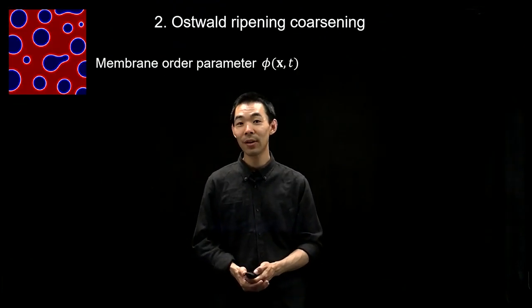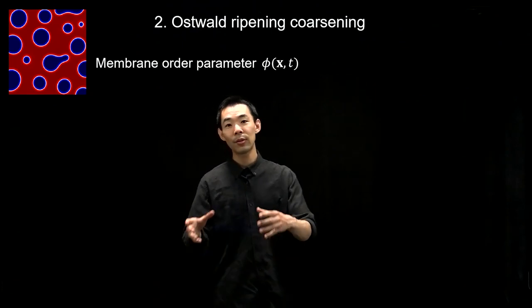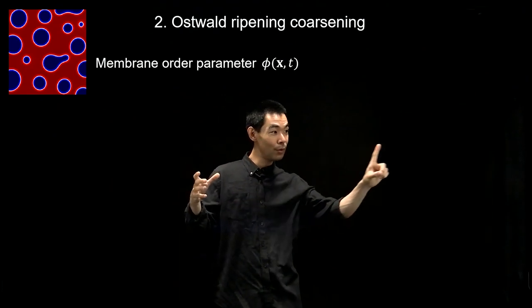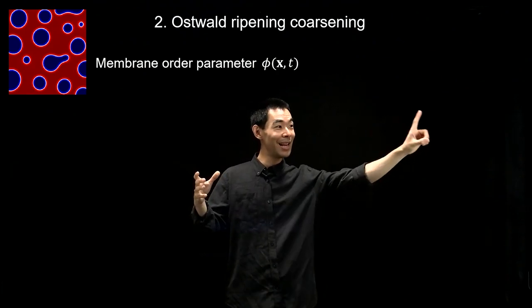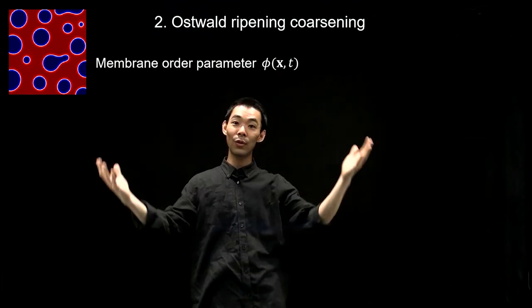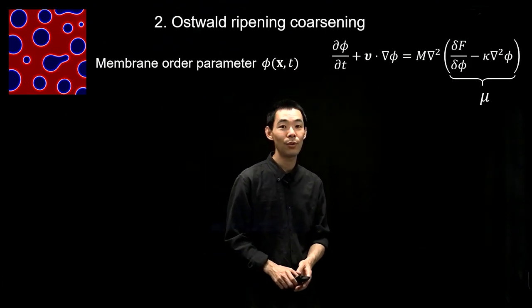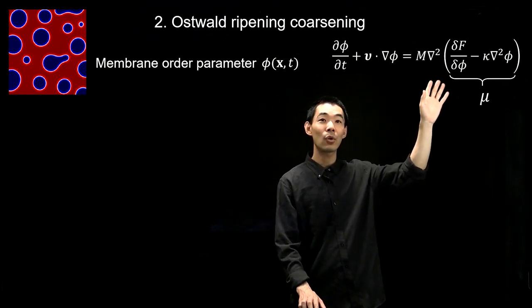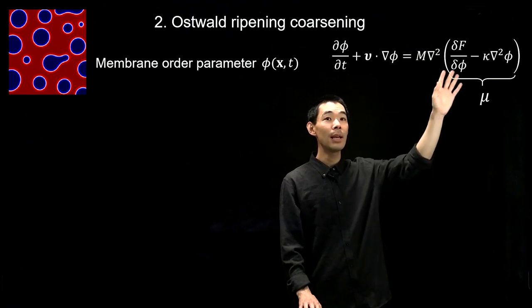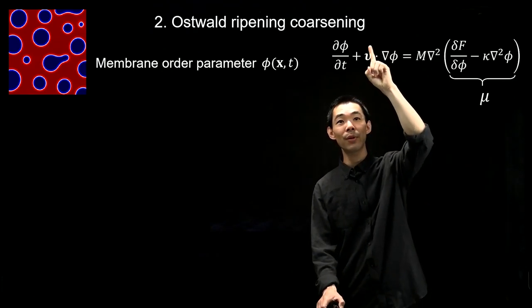Now let me talk about Ostwald ripening — a very different coarsening mechanism. Here, the domains are not treated as colloidal particles but as collections of lipid molecules. The molecules can dissolve into the background majority phase, diffuse around, and then condense onto a nearby droplet. It's a molecular dissolution and condensation mechanism, very different from two big colloids fusing. In Ostwald ripening, we evolve a membrane order parameter satisfying a convection-diffusion equation, where diffusion is driven by gradients in chemical potential — with a double-well potential for the bulk equation of state and line tensions that penalize square gradients.